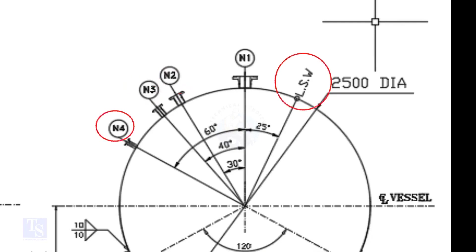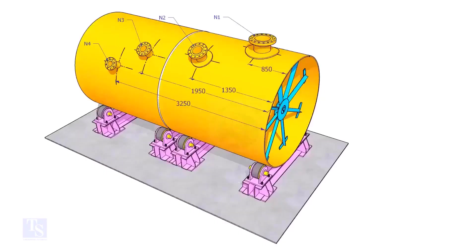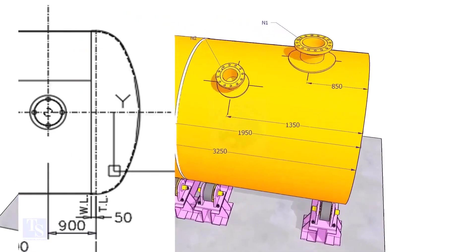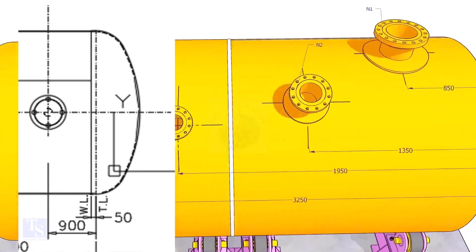Nozzle N1 is turned 25 degree from LSW. As the straight face 50mm is on the dish end, we need to subtract 50mm from the overall dimension.